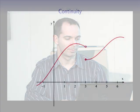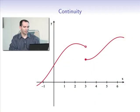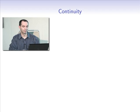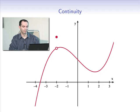Have a look at the following graph. Here we see a jump when x equals 3, and therefore this function is discontinuous at that point. Here there is a hole when x equals negative 2, and therefore this function will be discontinuous as well.